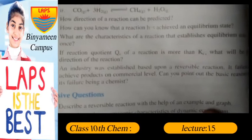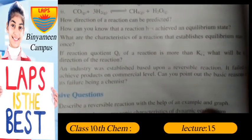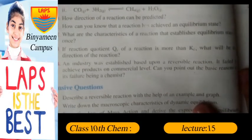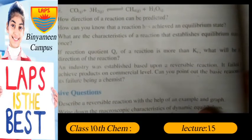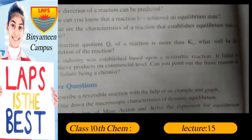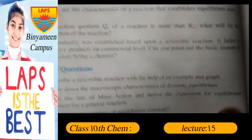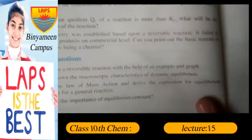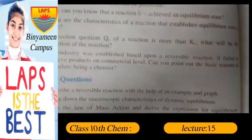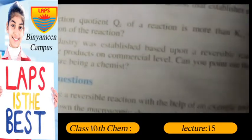What are the characteristics of reactions that have established equilibrium state? If the QC of a reaction is more than the KC value, what will be the direction of the reaction? An industry was established based upon a reversible reaction but failed to achieve product on a commercial level — can you point out the basic reasons for its failure as a chemist?